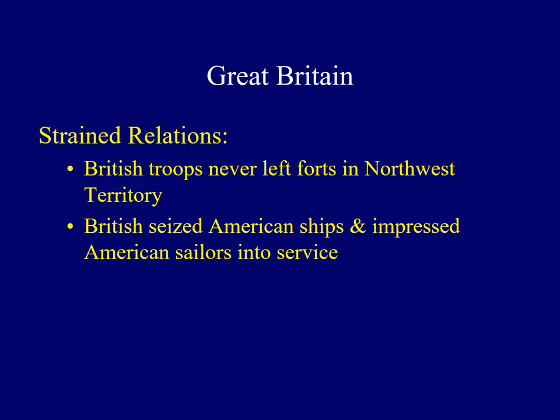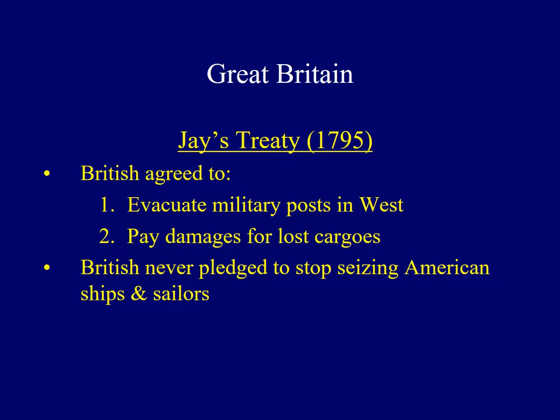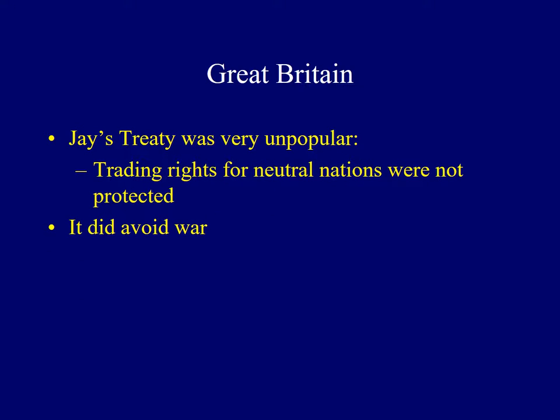Relations with the British remained problematic. In defiance of the Treaty of Paris, British troops continued to occupy several forts in the Northwest Territory, engaged in the fur trade, and openly traded goods with Native Americans opposed to the United States. They also seized several American ships along with their cargoes and impressed sailors into the Royal Navy. To avoid war, Washington sent Chief Justice John Jay to London, where he negotiated Jay's Treaty but was unfortunately unable to win many concessions. The British agreed to leave the military posts out west and pay damages for past seizure of American goods, but made no pledge to stop future actions. Jay's Treaty was very unpopular, but it was important because it avoided war at that time.